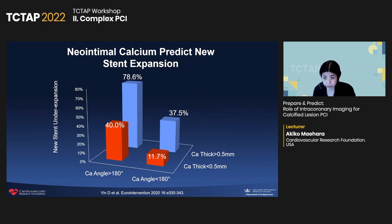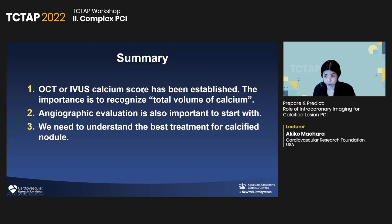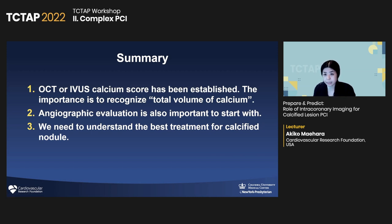How can we predict stent expansion in in-stent neoatherosclerotic calcium? It's actually quite similar to the de novo region — if you have big or thick calcium, that indicates poor stent expansion. To conclude, based on IVUS and OCT, the calcium score is quite helpful. The key is understanding the total amount of calcium volume in the region, which indicates stent expansion. I recommend starting with careful angiographic evaluation as a complement, especially in IVUS imaging since we cannot see the thickness of the calcium. Finally, we are learning more and more about the calcified nodule and we have to understand the best treatment for it.